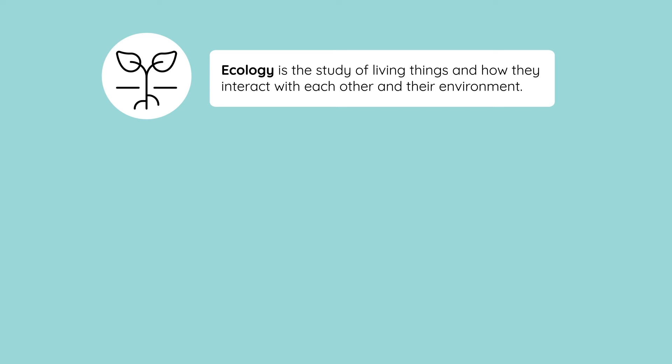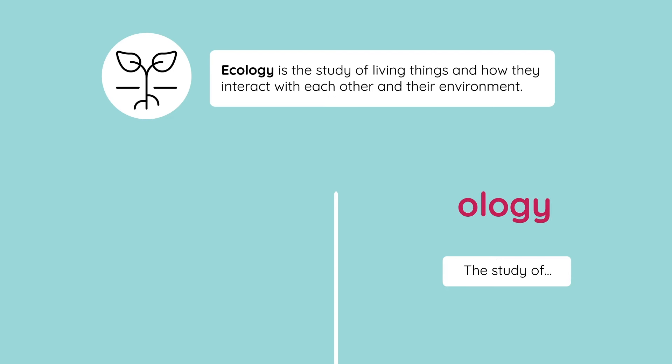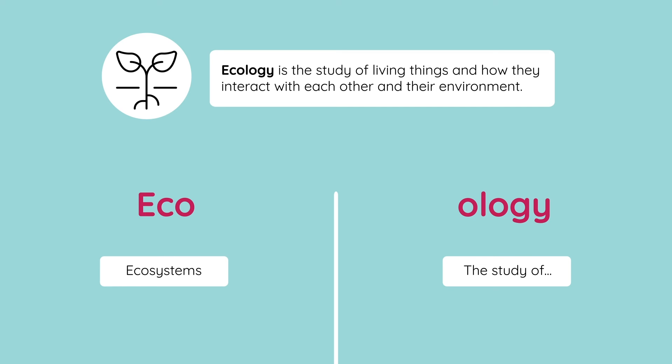Ecology is the study of living things and how they interact with their environment. Any time you see 'ology' at the end of a word, it means the study of. In this instance, the first part of the word is 'eco', so this refers to ecosystems and how living organisms have relationships, both positive and negative, with the living and non-living parts of their environment.